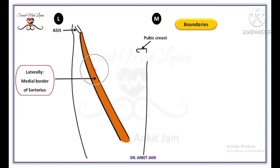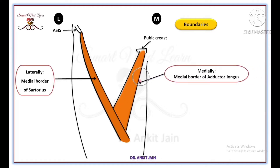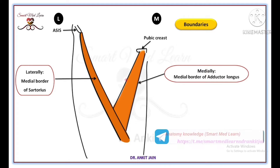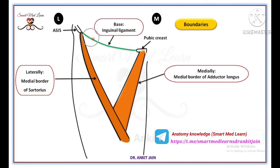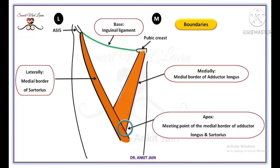Medially it is bounded by the medial border of adductor longus muscle. The base of the femoral triangle is formed by the inguinal ligament. The apex is directed downward and is formed by the meeting point of the medial border of adductor longus muscle and sartorius muscle.